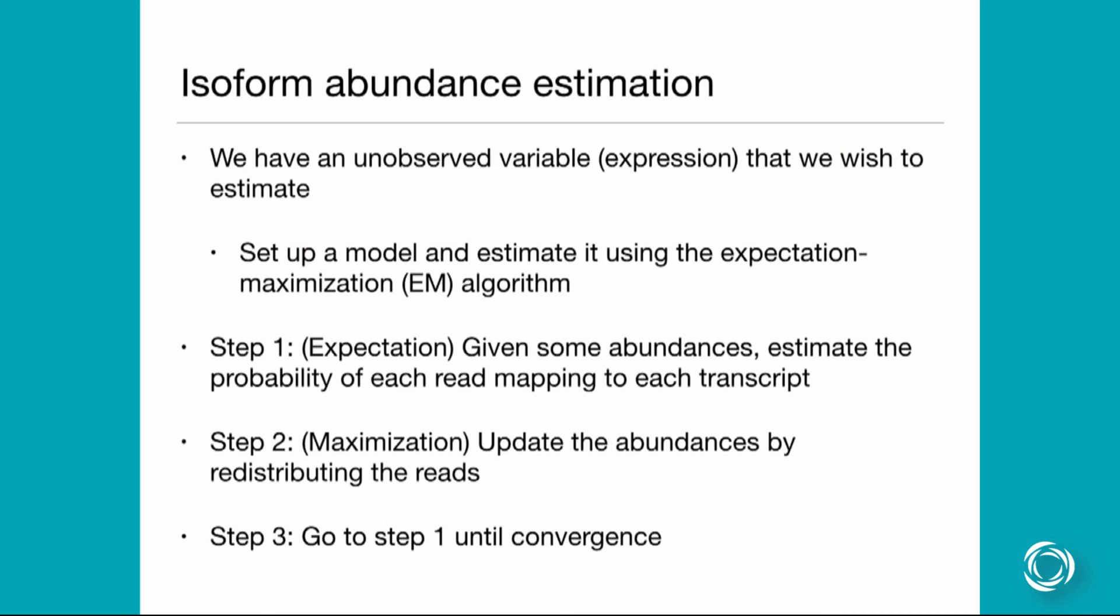So the basic algorithm is as follows. We have some unobserved variable which is expression which we want to estimate. The typical way, and there's a lot of statistical literature on this, is using the expectation maximization algorithm or the EM algorithm. This isn't just something that we made up a few years ago in RNA-seq. It has some well-founded statistics for many years. The basic idea is that you have two different steps: the expectation step and the maximization step. In the expectation step you have some abundances, and you might set them up with some prior, and you estimate the probability of each read mapping to each transcript. Then you're basically proportionally assigning each read relative to the rates that you had, your prior rates. And then you maximize, do some maximization steps. So you actually update the abundances now by redistributing the reads depending on this proportion that you have for each read. And then you go to step one until convergence.